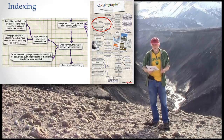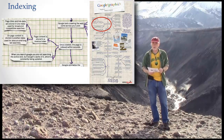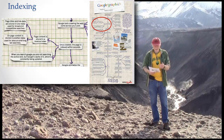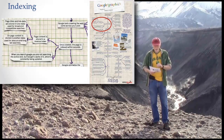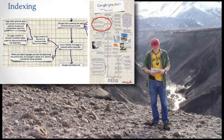What we just talked about is this idea of a reverse index. This is the summary — I'll go through it to make sure I cover all the points on this diagram. Page titles are indexed, and page content is indexed. It also says that when you search the Google index, you're not searching the actual page on the web — you're searching Google's cache, and we'll talk about that in a few minutes.